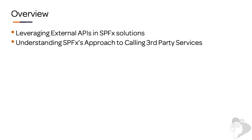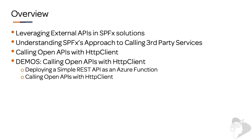We're going to look at understanding the SharePoint Framework's approach to calling third-party APIs and third-party services. Then we're going to look at how we can call anonymous or open APIs using something called the HTTP client that's part of the SharePoint Framework API. We're going to start diving into demos all about calling these open APIs with the HTTP client. I'm first going to show you how to use Azure Functions to deploy a very simple API as an Azure Function so that you can call it from your SharePoint Framework solution. Then we're going to create a SharePoint Framework solution that uses the HTTP client to get data from this third-party API living in an Azure Function.